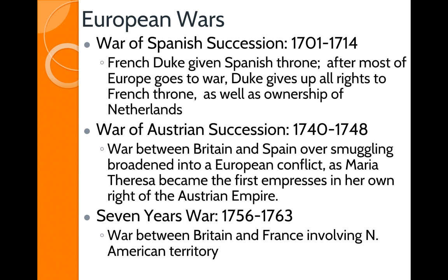In the War of Spanish Succession, a French duke who was third in line to the throne of France was given the Spanish throne. Europe went to war over this because of serious concerns that once this French duke had the throne of Spain, he would also inherit the throne of France. The only way this was resolved was that the French throne and ownership of the Netherlands had to be given away so the French duke could actually go and rule Spain.